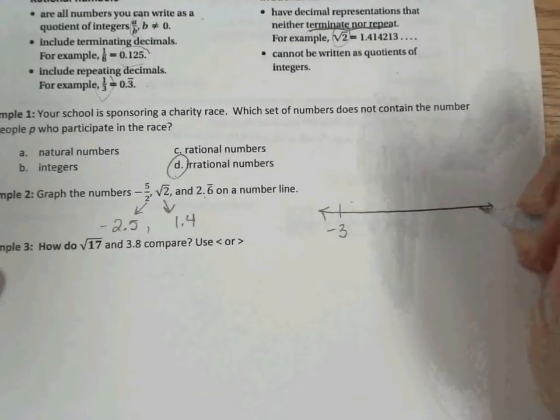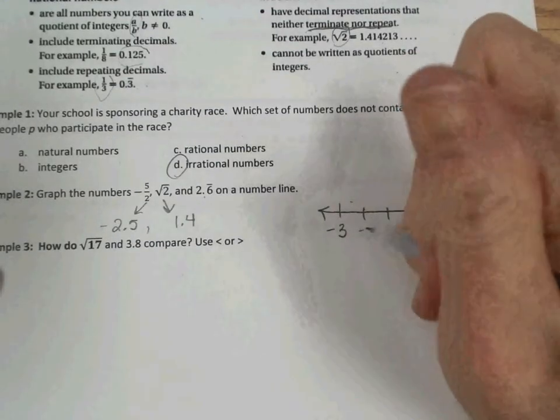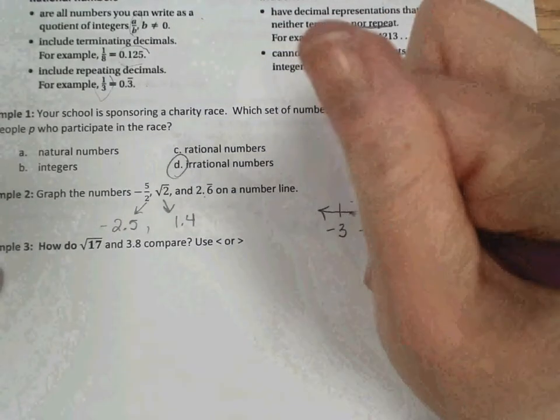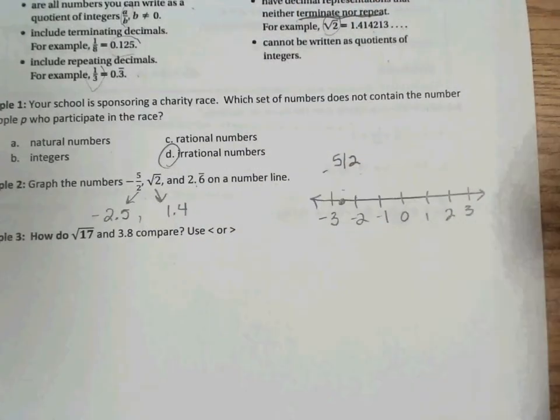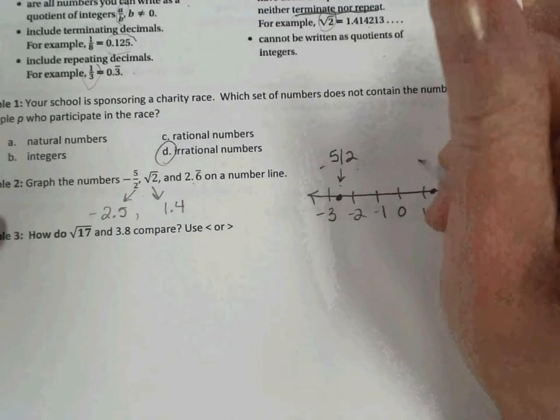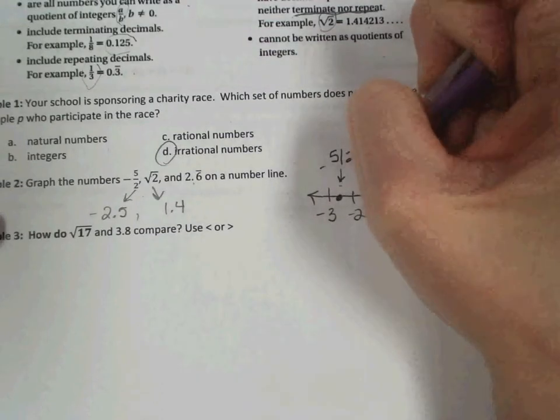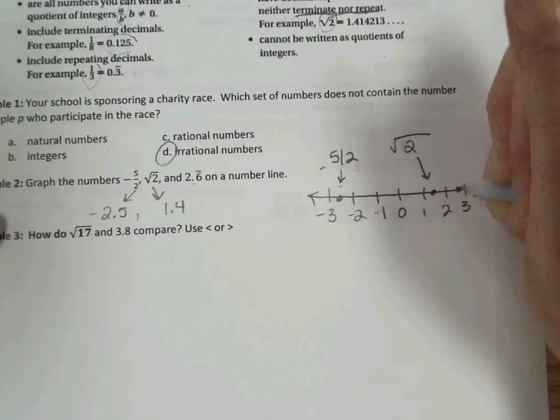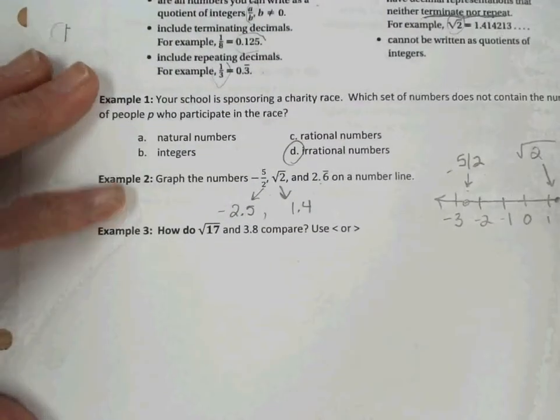So we can go ahead, on our graph we need to go down to negative 3 and up to positive 3. And fill in the rest. And then we plot our points. Negative 5 halves would be right here between negative 2 and negative 3. And we're going to go back and write them in their initial form when we graph them. And the square root of 2 is 1.4. So we'd find that here. Square root of 2. And 2.6 repeating is just past halfway, between 2 and 3. So the 2.6 repeating.